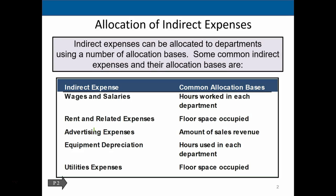Some common indirect expenses and their allocation bases include wages and salaries. If wages and salaries are indirect in nature — meaning they apply to more than one department — we need a method to apply them to different departments. Simply dividing by the number of departments doesn't work well since departments may not be equal in size. A common approach is to use hours worked in each department, so the department with more hours gets allocated more of the wages.